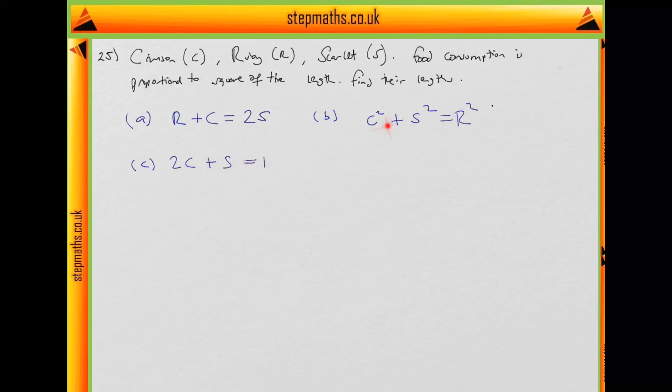So if we could replace the S in here with the S from here, we could solve for C in terms of R. So what we'll do is we say this tells us, this equation C tells us that S equals to 1 minus 2C. So if we label this as 1, 2 and 3, we're going to put 3 into 2. And therefore we get C squared plus 1 minus 2C squared equals to R squared.